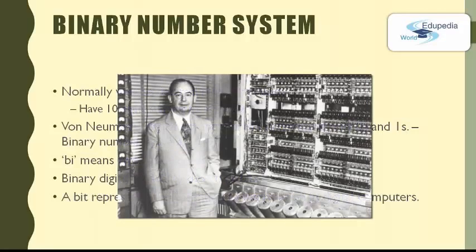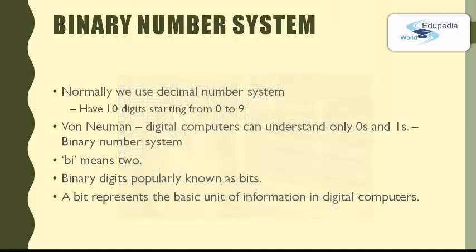This is the idea given by John von Neumann. So in order to use a number system which will be understandable to the computer, the number should constitute only of zeros and ones. This number system is known as binary number system. Now what is the meaning of binary? Bi means two. So all binary numbers consist of a set of zeros and ones and no other digits.